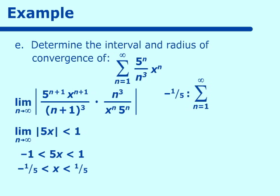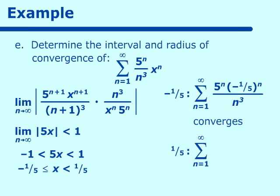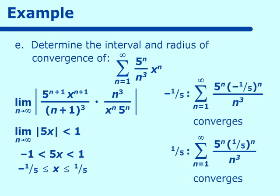Checking x = −1/5: we get 5^n times (−1/5)^n over n³, which simplifies to (−1)^n over n³. That converges, so we include x = −1/5. Checking x = 1/5: we get 5^n times (1/5)^n over n³, which is 1^n over n³ = 1/n³. This converges by the p-series test (p = 3 > 1). So the interval of convergence is [−1/5, 1/5], including both endpoints. The radius of convergence is 1/5.